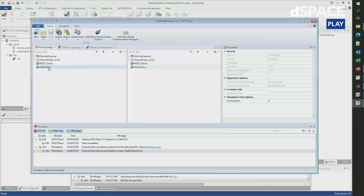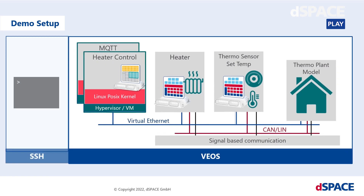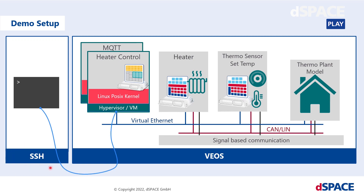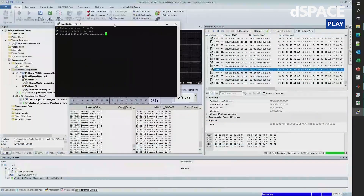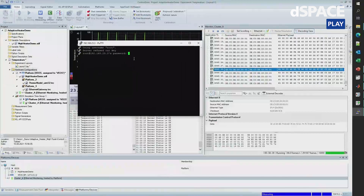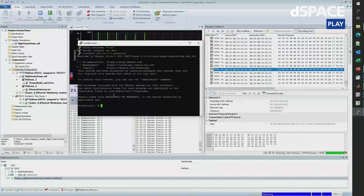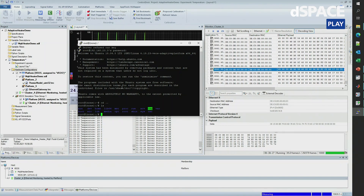Let me return to my slides for a second. I can also add an SSH connection coming from outside of VEOS — it could be any other tool — and access the virtual Ethernet of such a virtual ECU. I can open PuTTY, change the setting to the right IP address, and log in. Here I could do anything you would usually expect from a terminal window — examine my file system, for example. This is just a regular Linux-based machine.